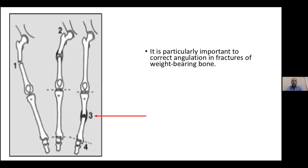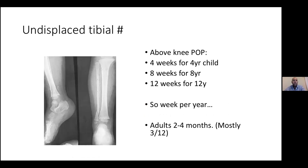It is absolutely essential to get the tibia in a good position. For undisplaced tibial fractures in kids — like this nice picture of a greenstick fracture of the distal tibia in beautiful position — they'll remodel anyway. POP it: four weeks for a four-year-old, eight weeks for an eight-year-old, twelve weeks for a twelve-year-old — roughly one week per year. After twelve weeks, manage as adults: two to four months. If it's an older patient who smokes and uses steroids, they'll take much longer — probably four months in a POP versus two months for a young, healthy, non-smoking patient.